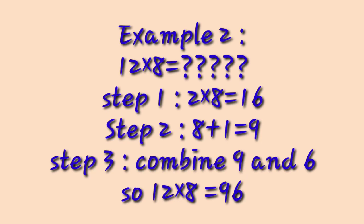Let us take another example — 12 times 8. Multiply 2 by 8: 2 eights are 16. Now add 8 with the tens digit of 16, which is 1: 8 plus 1 equals 9. Combine 9 and 6, and you get 96. So 12 times 8 equals 96. This method is applicable for the 2-digit number 12. I think the concept is clear to you.